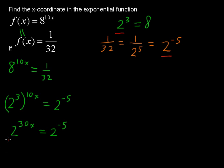Now we have these like bases, 2 and 2. And so therefore we can just say that if we know that 2^(30x) = 2^(-5), then we can also say that